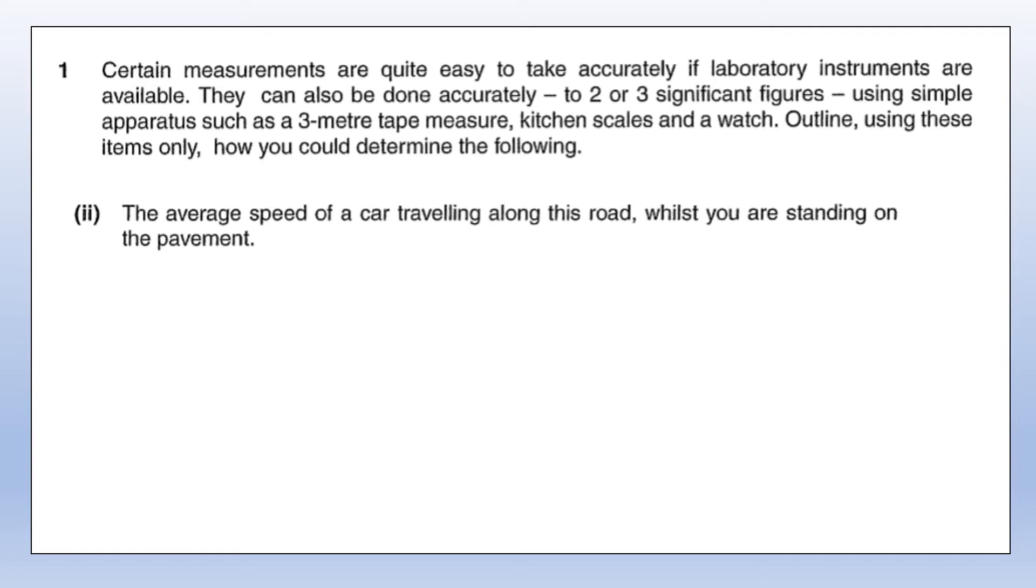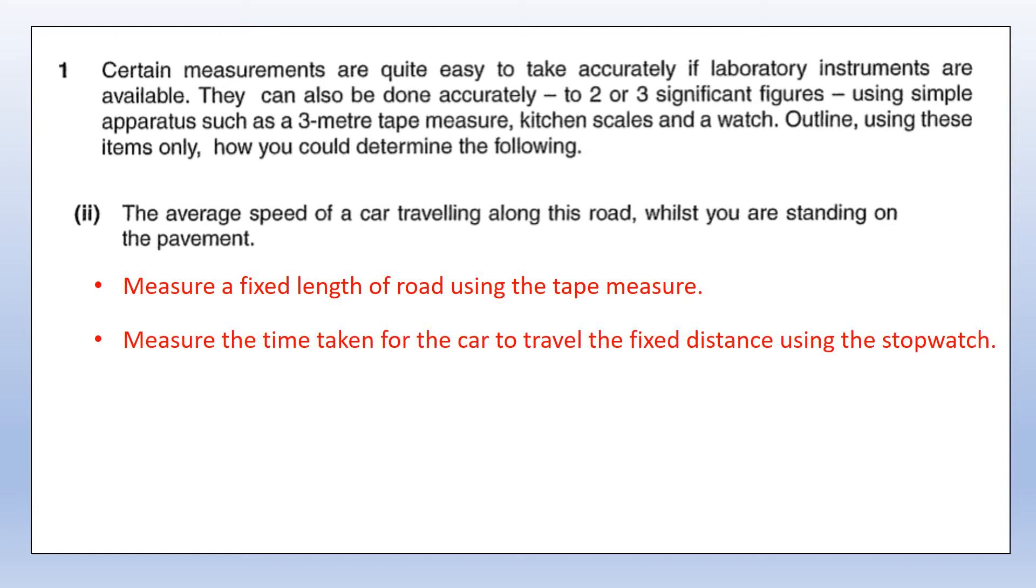Next, you want the average speed of a car traveling along this road while you are standing on the pavement. First we're going to measure a fixed length of road using a tape measure, maybe using the strategy we've just come up with to measure a longer distance. Then we're going to use the watch to measure the time taken to travel that fixed distance. Average speed is distance over time, so that's fairly straightforward.